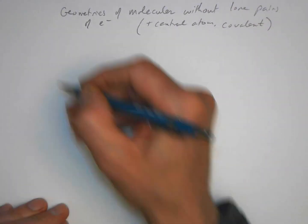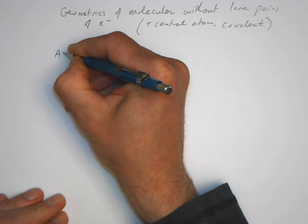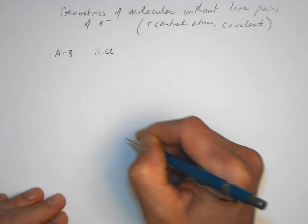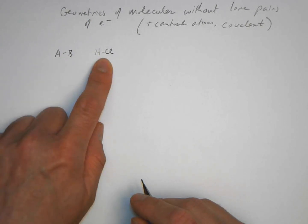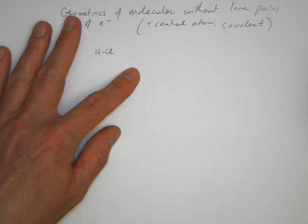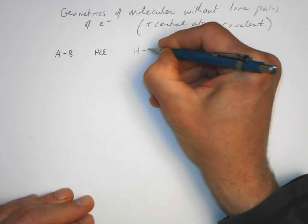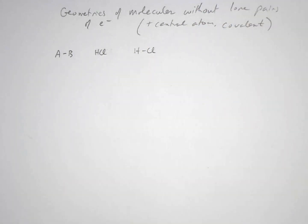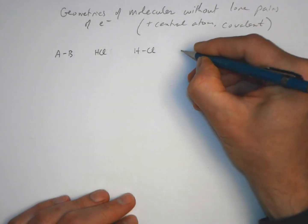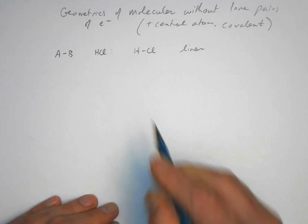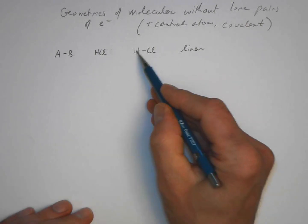Let's make a table of examples. For an AB molecule, an example would be HCl. We draw the Lewis structure of HCl — the shape of this molecule is linear. We just have two atoms on either end of one bond, giving a linear shape.